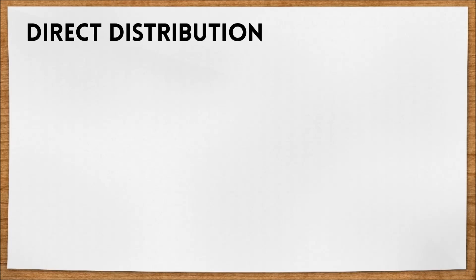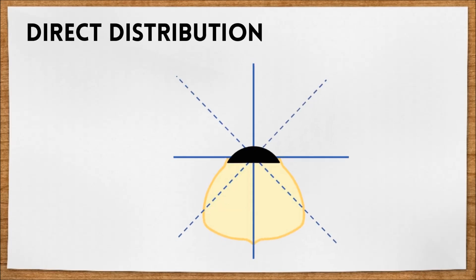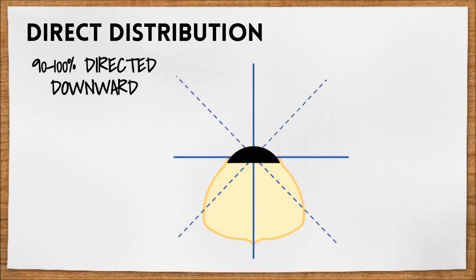The first is direct. Direct distribution is shown in a diagram like this. We can see that 90 to 100% of the light is directed downward for maximum use.